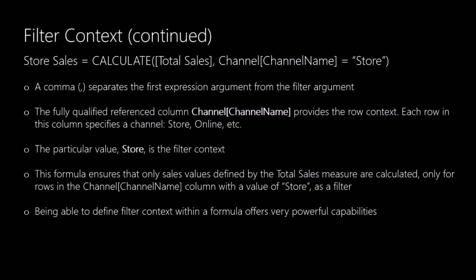A comma separates the first expression argument from the filter argument, and the filter argument provides the row context. Each row of this column specifies a channel such as store, online, etc. And the particular value store is the one we're using for the filter context. This formula ensures that only sales values defined by the Total Sales measure are calculated where the rows in the Channel Name column have a value of store.